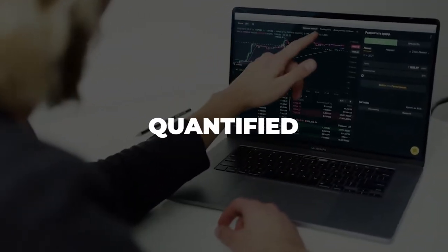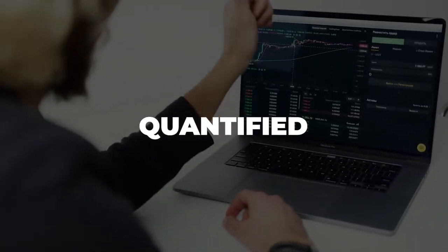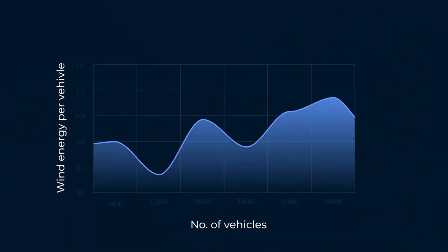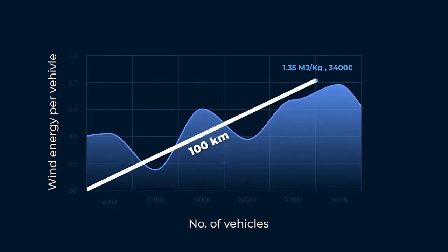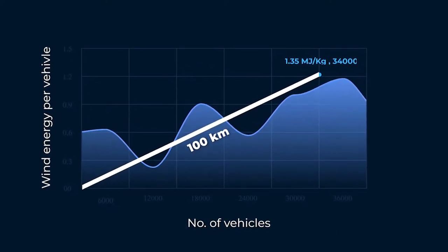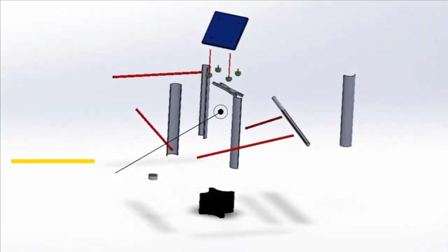We analyzed and quantified the potential and found that on average for a highway of length 100 km, 34,000 vehicles pass on a daily basis producing 1.35 MJ per kg of wind energy per vehicle.